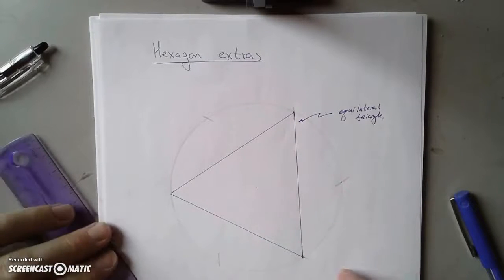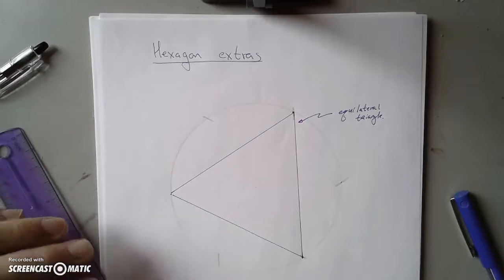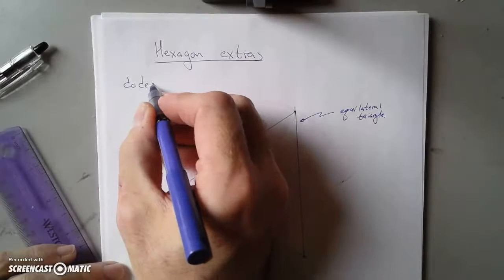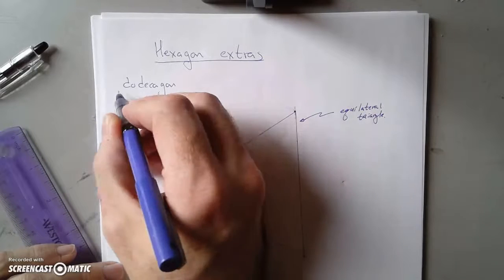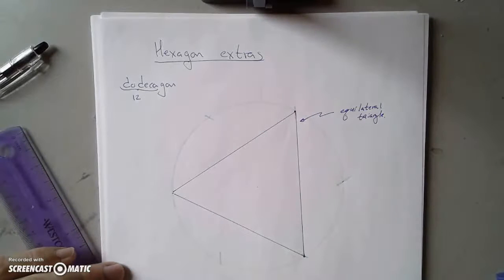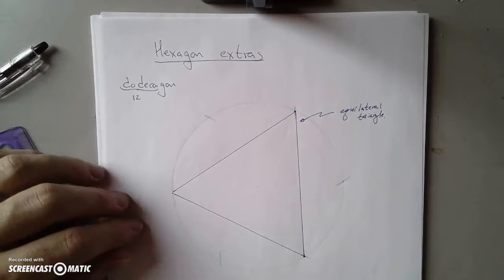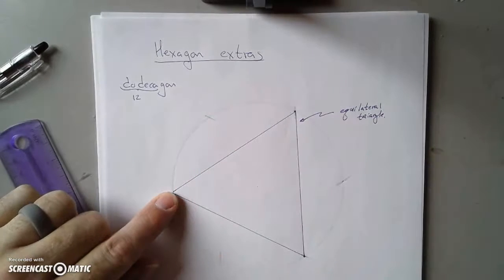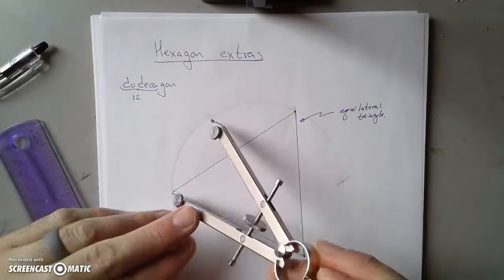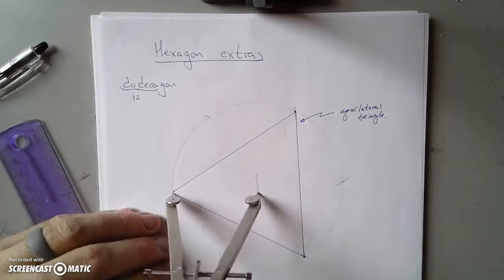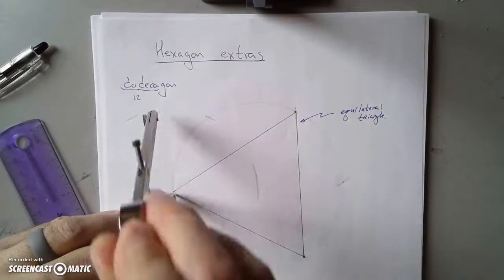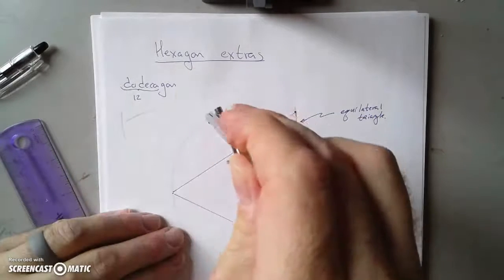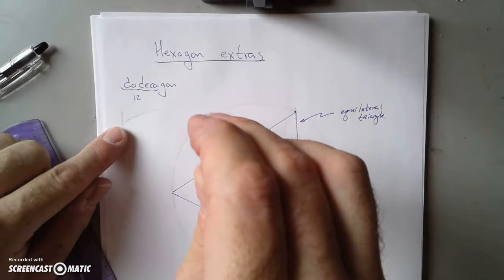Now another thing you can do with this construction is make a dodecagon. The dodecagon has 12 sides — twice as many — so 'dodeca' means 12. We can use the perpendicular bisector to divide this arc in half, and we can actually keep our compass at the same opening. Make a mark below and a mark above, then swap the pointing end of the compass to the other point and make a mark above and below.